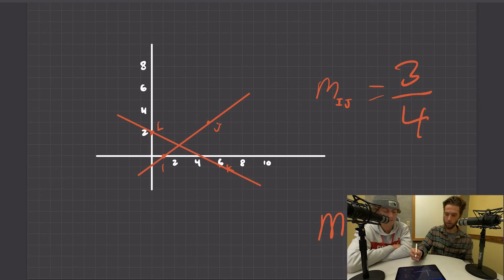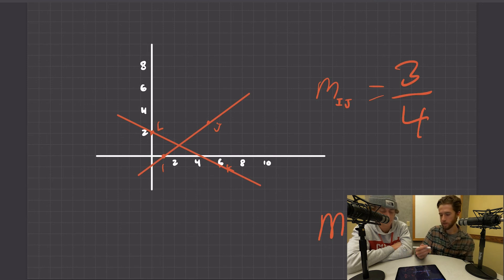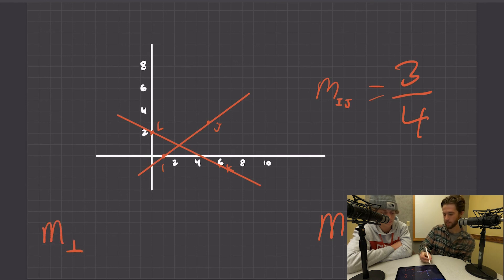The perpendicular slope to three fourths is called the opposite reciprocal, and we're going to see it. I'll just do a graphing example so you can see it right after. Slope of perpendicular equals negative, because we know it's going to be downward, but it's not going to be down three over four, it's actually down four over three.